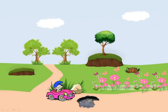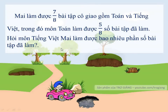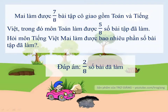Chúc mừng các bạn đã giải đúng đáp án! Chúng ta tiếp tục vượt chướng ngại vật tiếp theo. Các em nghe kỹ câu hỏi nhé! Mai làm được 7 phần 8 bài tập cô giao gồm toán và tiếng Việt. Trong đó, môn toán làm được 5 phần 8 số bài tập đã làm. Hỏi môn tiếng Việt Mai làm được bao nhiêu phần số bài tập đã làm? Các em suy nghĩ trong vòng 5 giây. Và đáp án của cô là: 2 phần 8 số bài tập đã làm, tính bằng cách lấy 7 phần 8 trừ đi 5 phần 8 bằng 2 phần 8.